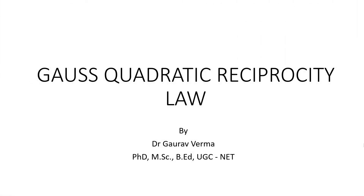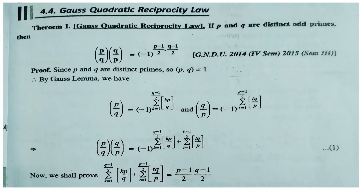Hello students, welcome to the channel of Dr. Gaurav Verma. In this lecture we will learn the Gauss Quadratic Reciprocity Law. The statement is: if p and q are distinct odd primes, then the product of the two Legendre symbols (p/q)·(q/p) is equal to (-1) raised to the power (p−1)/2 · (q−1)/2.